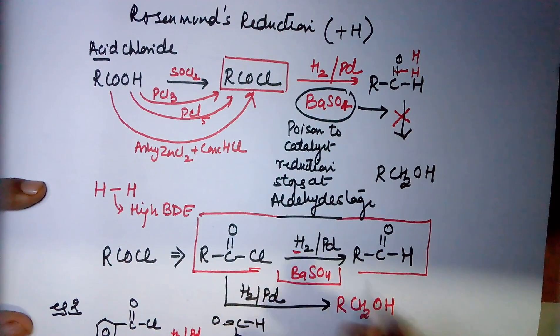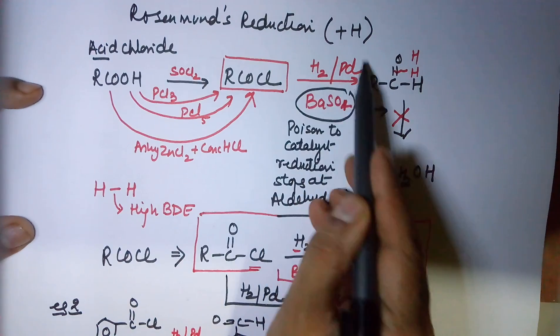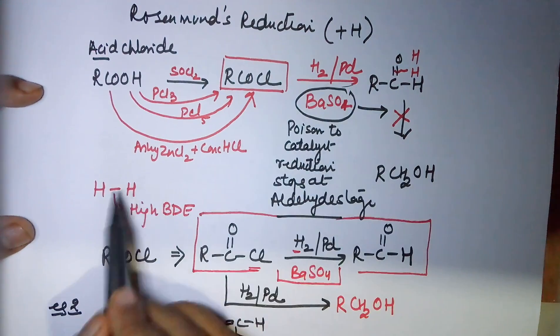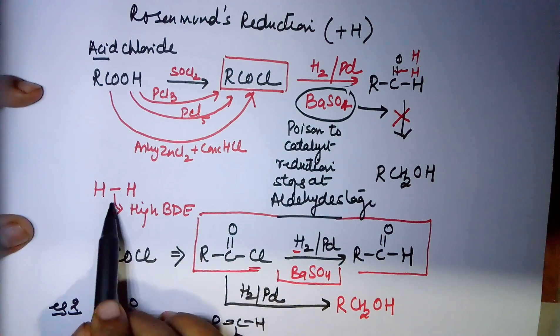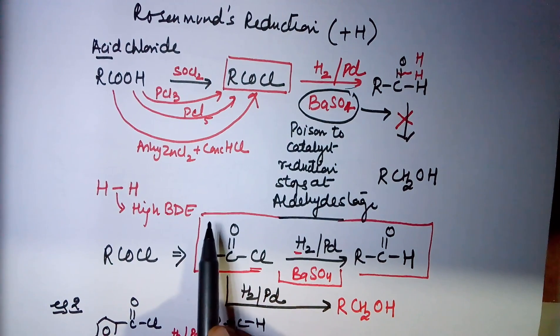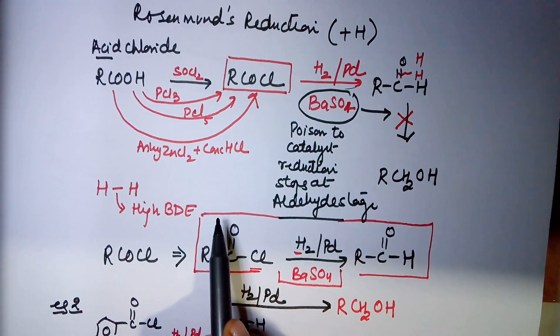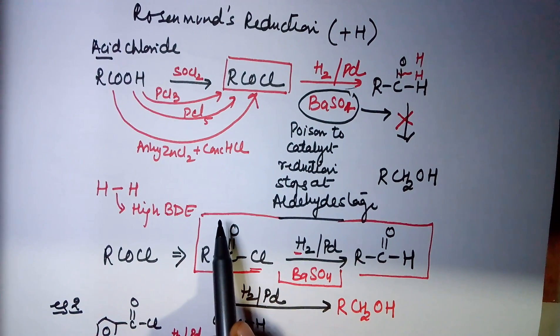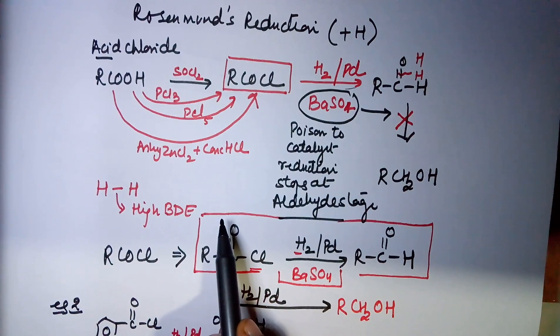So you have Rosenmund's reduction - this Rosenmund's reduction is a process where hydrogens are to be gained and you require a reducing agent. The reducing agent used is hydrogen - catalytic hydrogenation - because hydrogenation with direct H2 can never happen without a catalyst since the bond dissociation energy is extremely high and higher temperature is required which may decompose your organic compound. So by writing high temperature, high pressure, this reaction will never happen. And since it's a named reaction, you require the exact conditions, which is hydrogen in the presence of palladium.